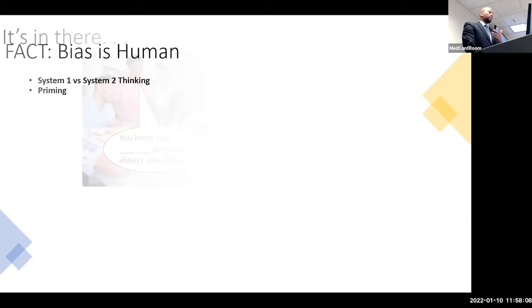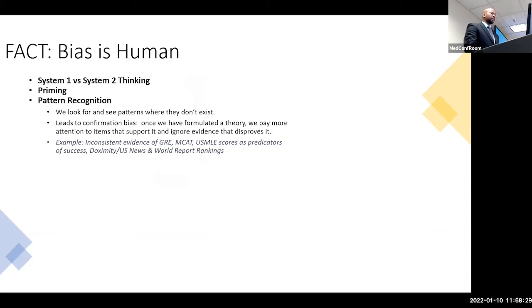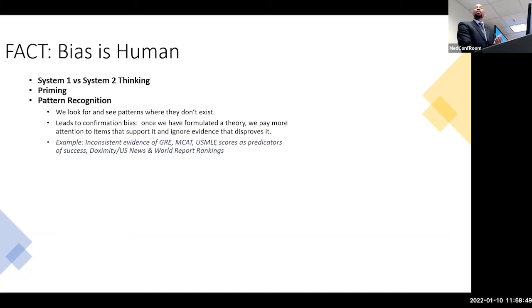Priming and pattern recognition have impacted medicine and impacted us even in academic medical centers. Pattern recognition is looking for patterns and seeing patterns where they don't exist, and once we formulate a theory we pay more attention and follow it. Think about things like MCATs, USMLE scores, US News and World Report rankings — there's a certain value placed on them within academic medicine. But in reality, there's not a lot of data to suggest that your USMLE score or MCAT score actually indicates how good of a provider you're going to be.